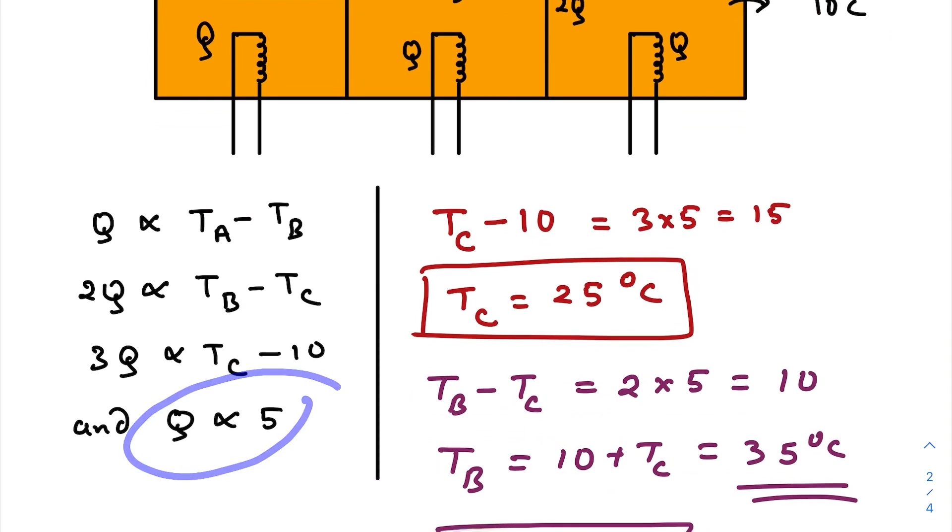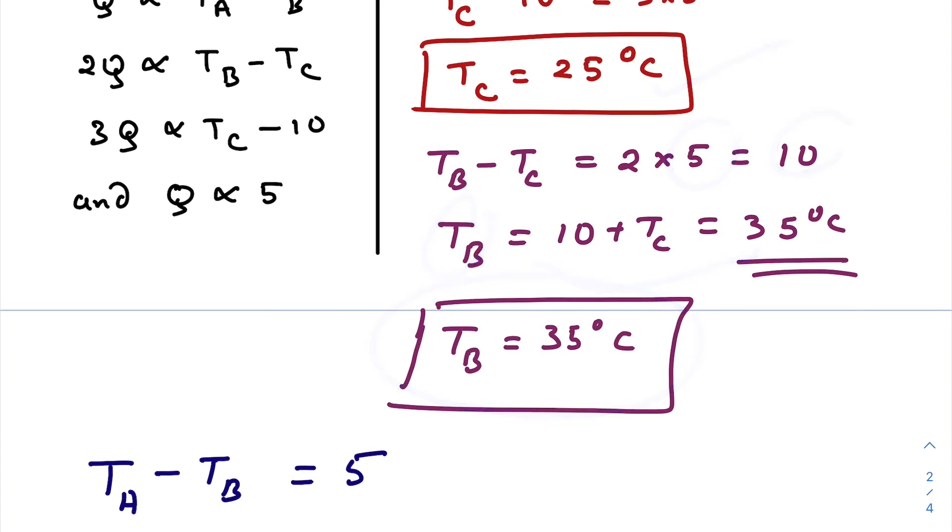So we get all these equations. And initially we have already found that Q is directly proportional to 5. So from here we can write T_C minus 10 equals to 3 times 5. Of course that proportionality constant will get cancelled out. So here it is 15, so T_C is 25 degrees Celsius. Anyways, so T_B minus T_C is twice of Q, that is twice of 5, which is 10. We already got T_C, so T_B is 35 degrees Celsius. So temperature of chamber B at stable situation is 35 degrees Celsius.